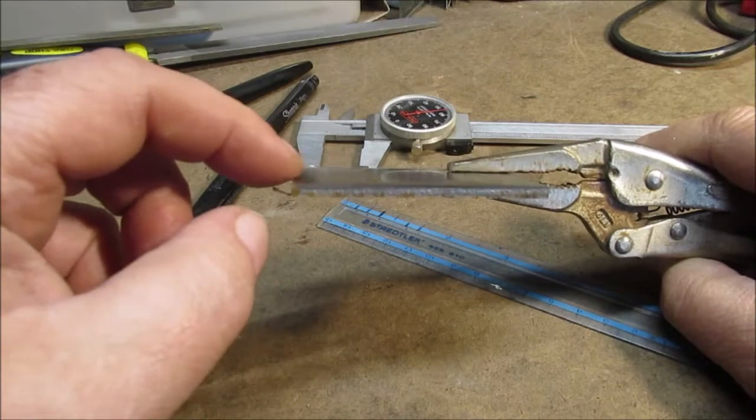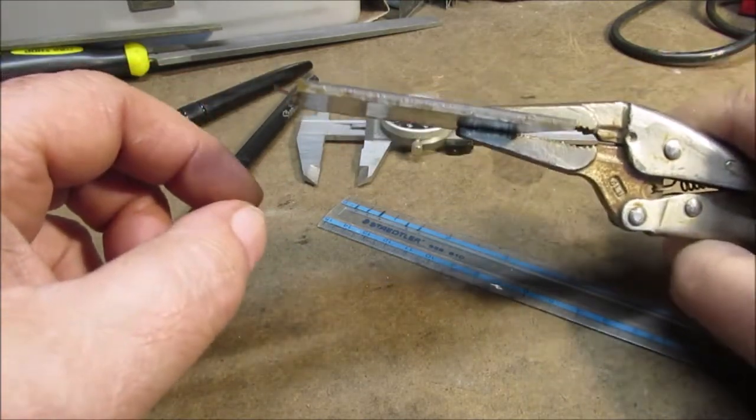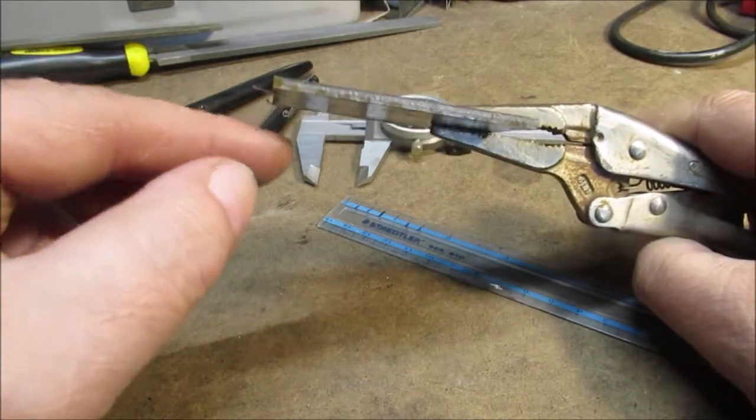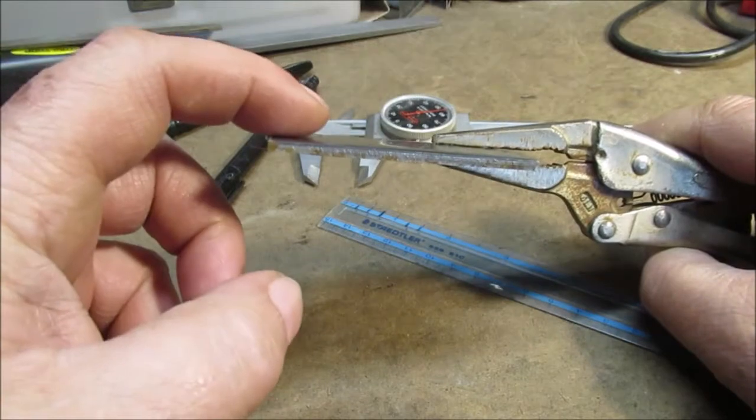The top one will be shaped kind of like a chisel where it's beveled so it slides up over the spring easier. It'll be beveled like here on the spring, so this would be flat up in the engine on the block. You'll see when we get done.